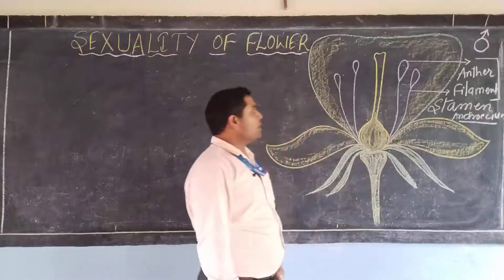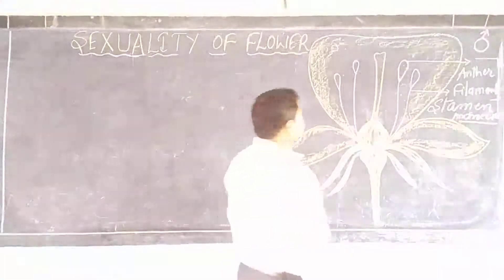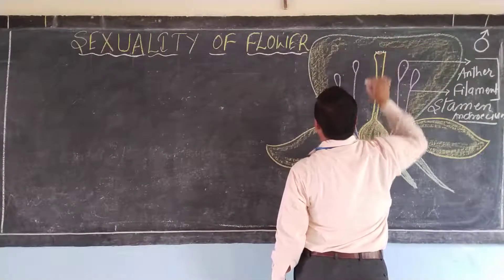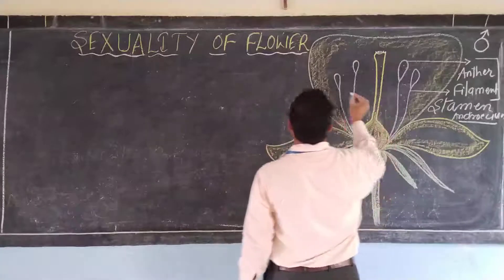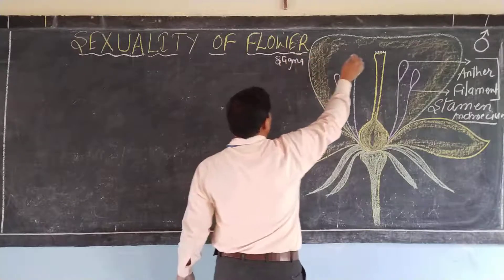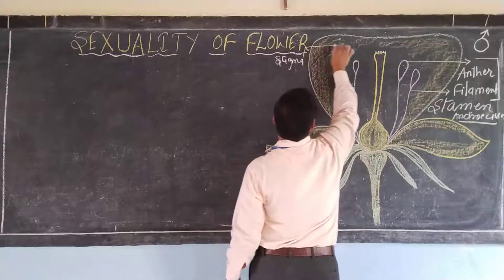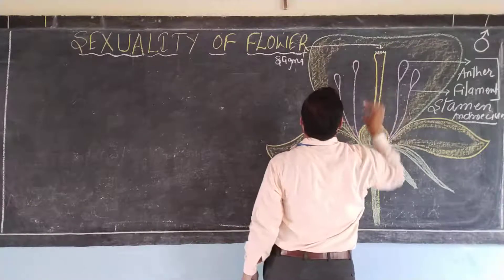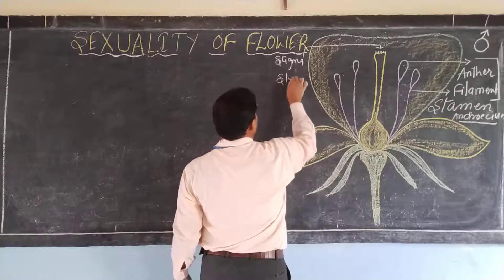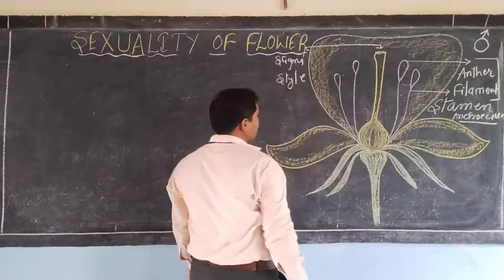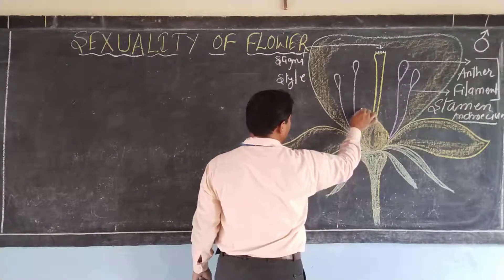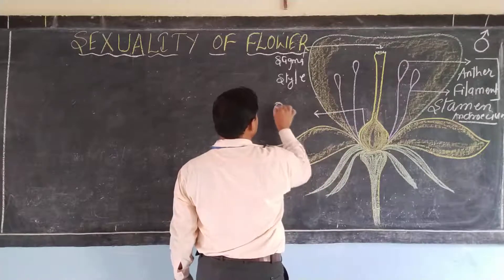Next is the female part of the flower. The top part is known as the Stigma. The tube-type part is known as the Style. The swelling portion you can see here is known as the Ovary.